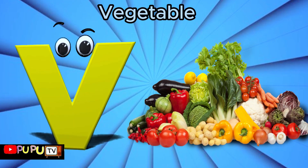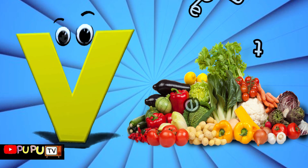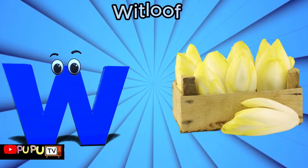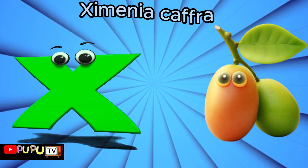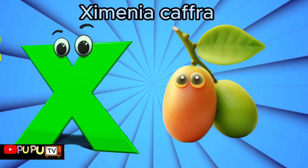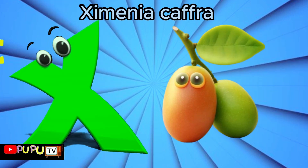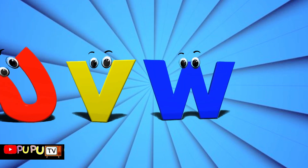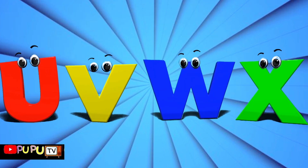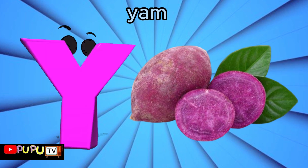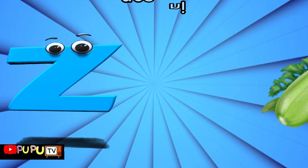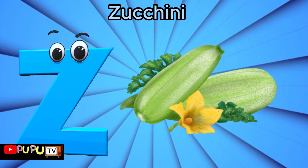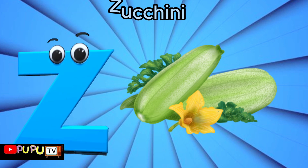V is for vegetables. W is for white loaf. X is for ximenia. Y is for yam. Z is for zucchini.